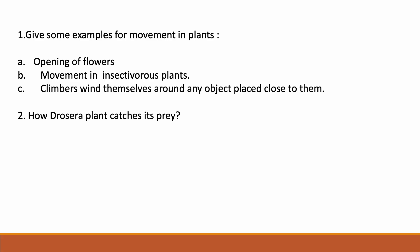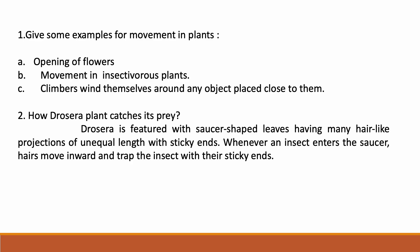How does a Drosera plant catch its prey? Drosera is an insectivorous plant featured with saucer-shaped leaves having many hair-like projections of unequal length with sticky ends. Whenever an insect enters the saucer, the hairs move inward and trap the insect with their sticky ends.